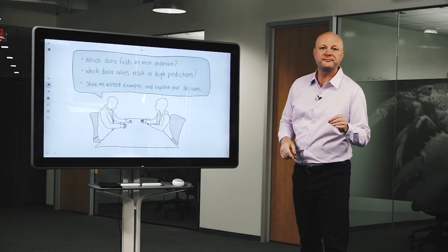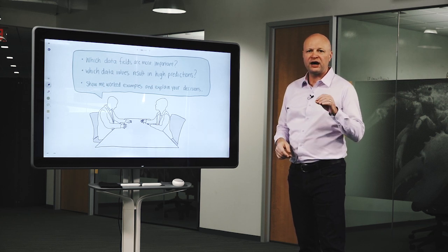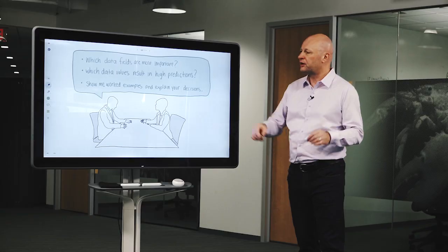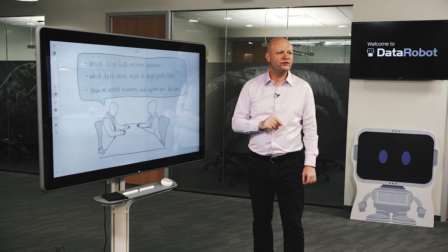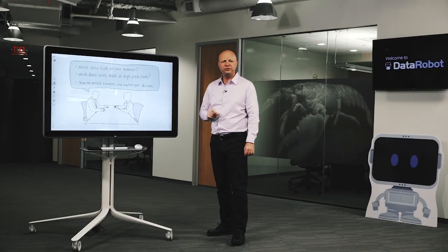So in summary, if you want to know whether you can trust your AI, ask it the same questions you would ask of a human. What's important? Which values are important? Show me some examples and give me some reasons.